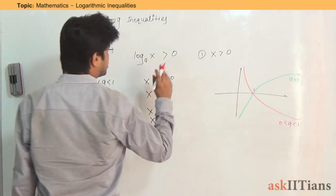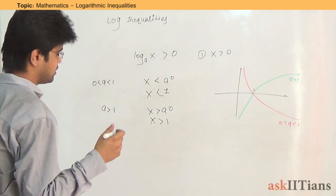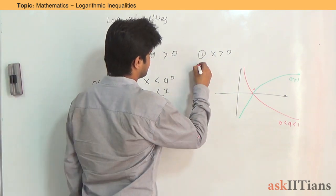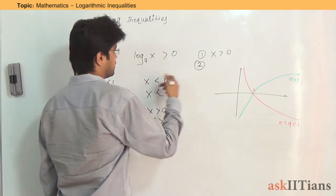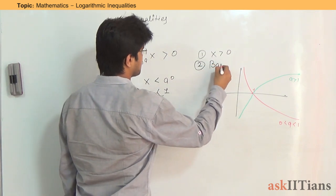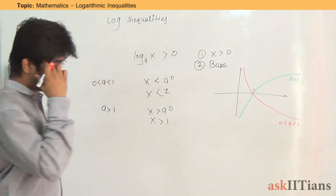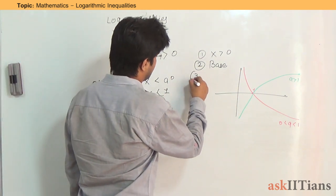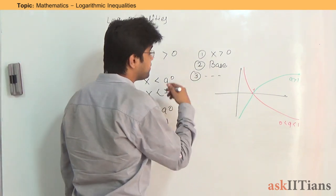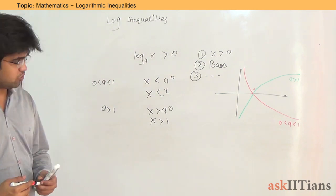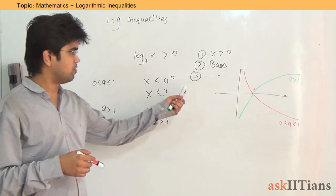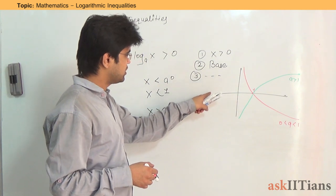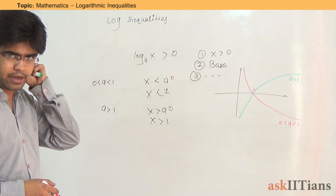So the steps are: first, check that x — whatever is inside the log — is greater than zero. Second, check the condition on the base. Third, check for any indeterminate forms in between. Whenever you have your answer, check it at least once back in the original question.